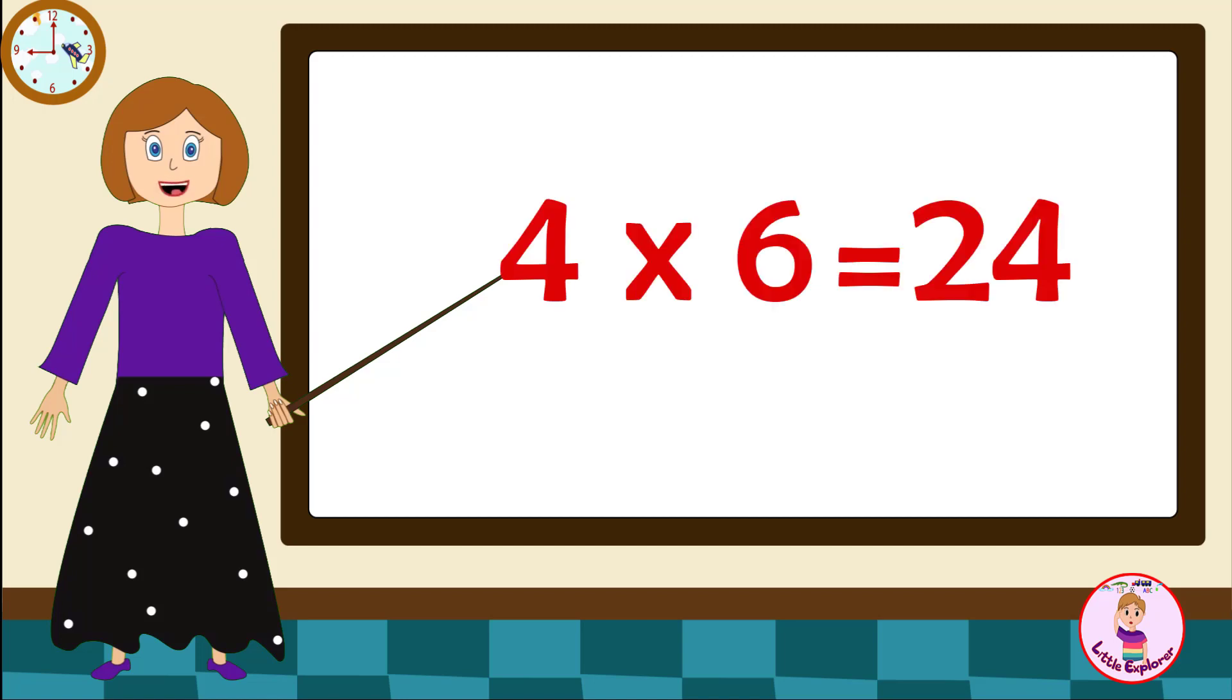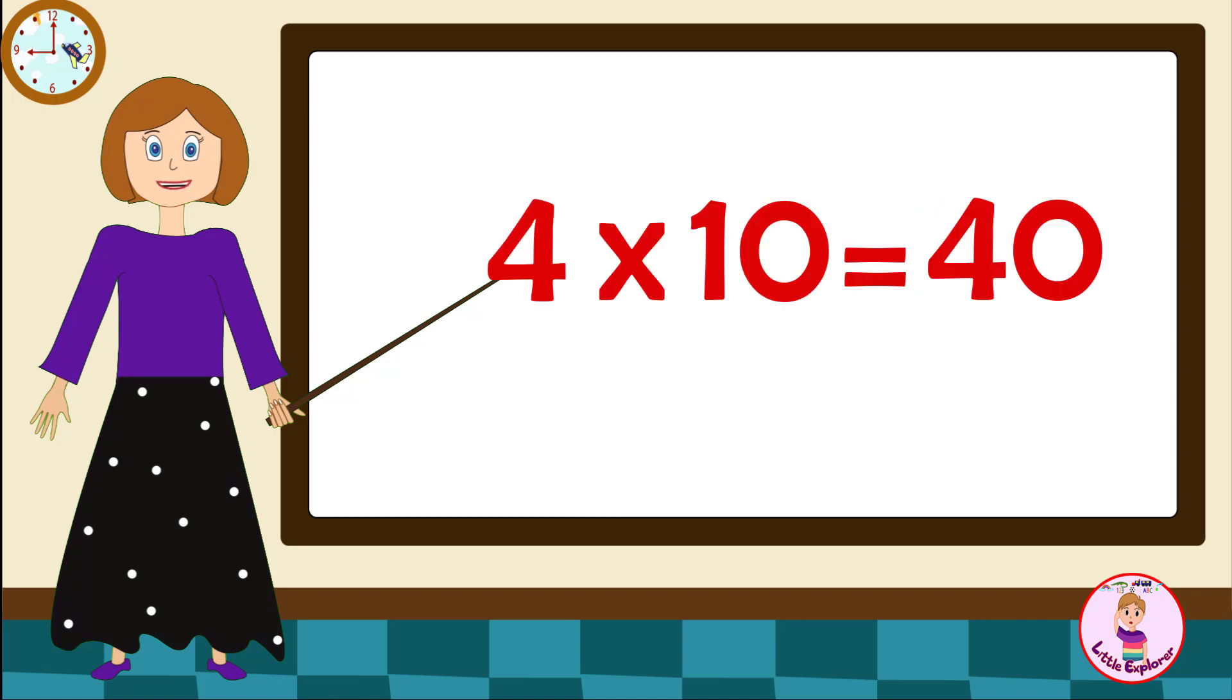Four sixes are twenty-four. Four sevens are twenty-eight. Four eights are thirty-two. Four nines are thirty-six. Four tens are forty.